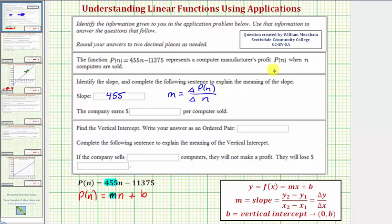So to understand the meaning of the slope, we want the slope written as a fraction. So let's write our slope as 455 over one. So the slope tells us the profit increases by 455 dollars each time one computer is sold. So we can say the company earns 455 dollars per computer sold.